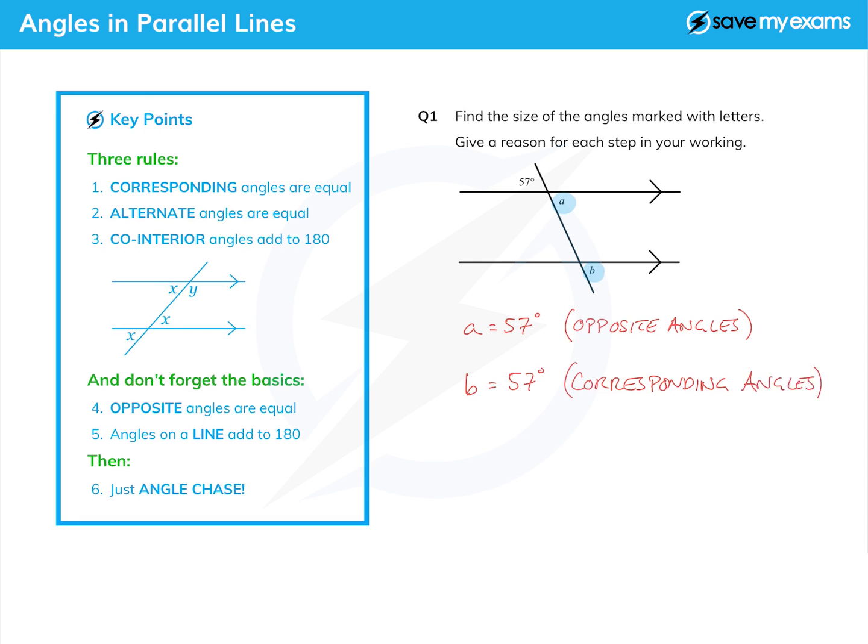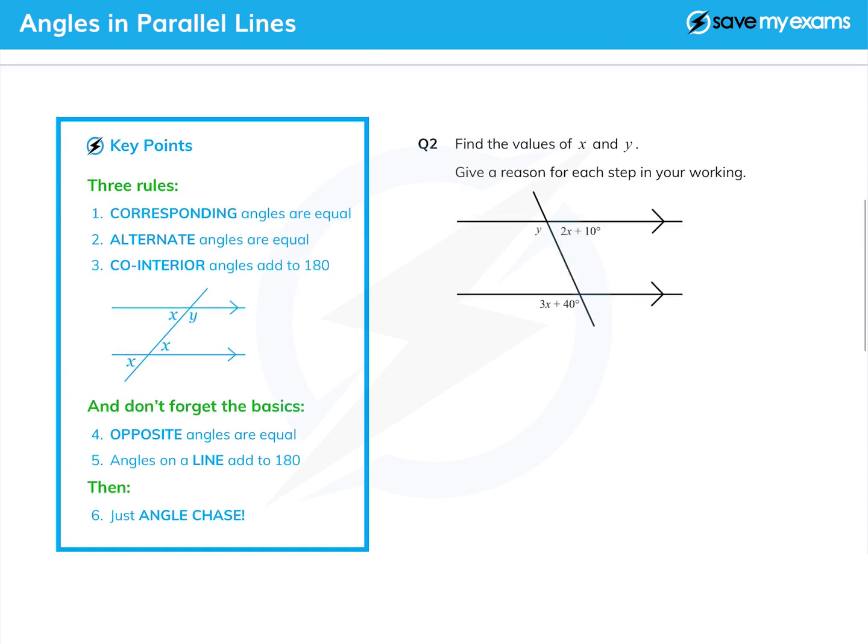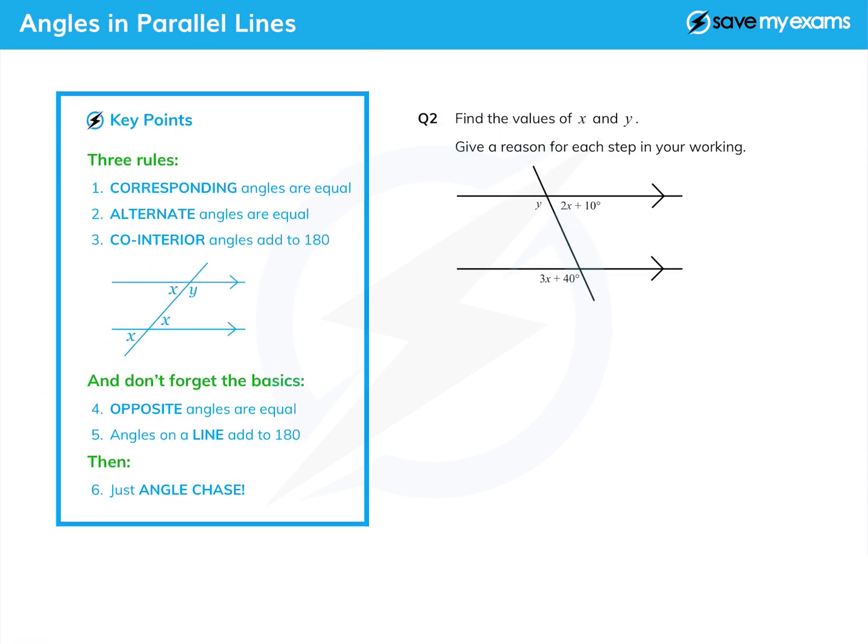Question two is one of those ones where there's a bit of algebra to do, but actually it's not too hard. What are we going to do? There are several ways of doing this question, but first of all, we're going to say this angle here, the 3x plus 40, is equal to this angle here.